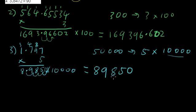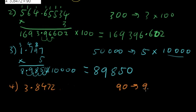Okay, and our last one, number four, is we have 3.8472 and we're trying to multiply it by 90. So this means that instead of trying to multiply it by 90, we're going to break 90 up and we're going to multiply it by 9 and then we're going to multiply it by 10. So let's multiply it by 9.